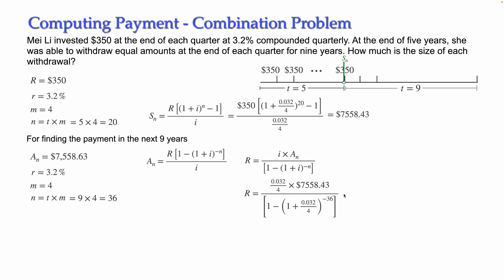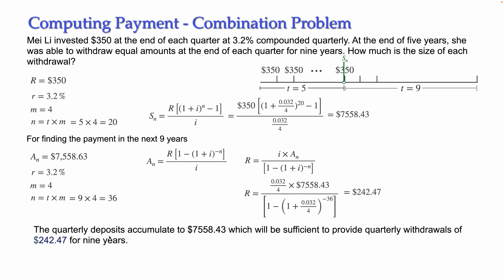Using the calculator, what I get is $242.47. So we can answer: the quarterly deposit of $350 accumulates to $7,558.43, and this amount is sufficient to provide quarterly withdrawals of $242.47 for nine years. With this I finish the explanation of this problem and this video. I hope you have found it useful. Thank you.